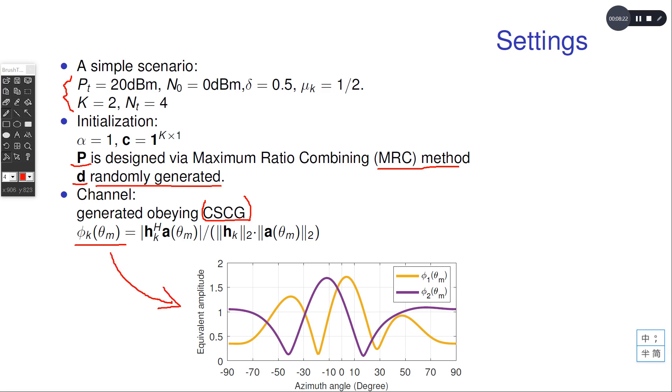The target stands at the zero degree in the azimuth angle. We can see in the equivalent amplitude that both the channels have a strong correlation value at this angle.